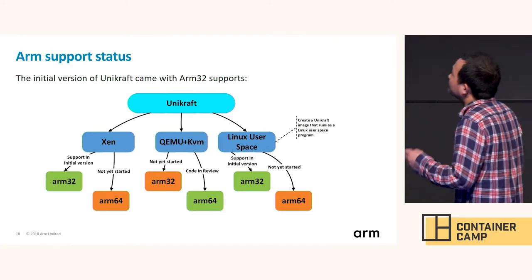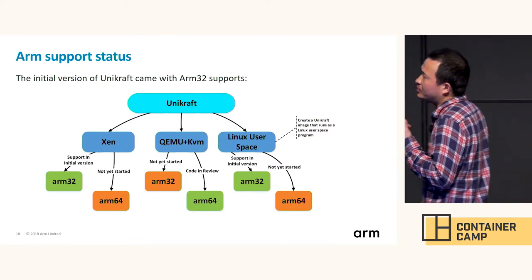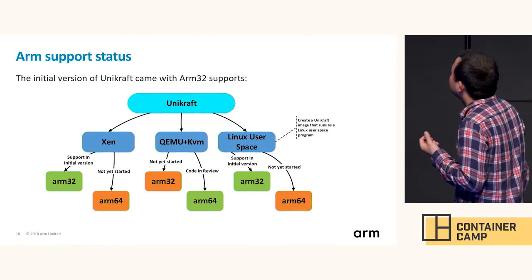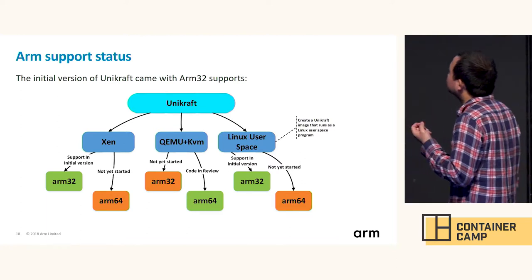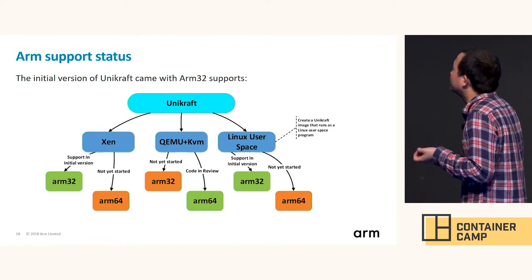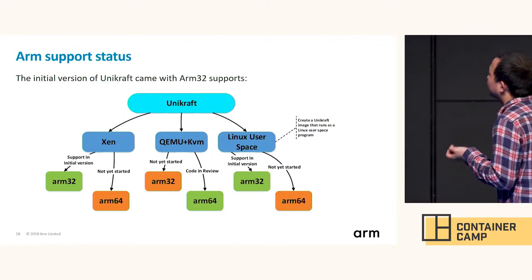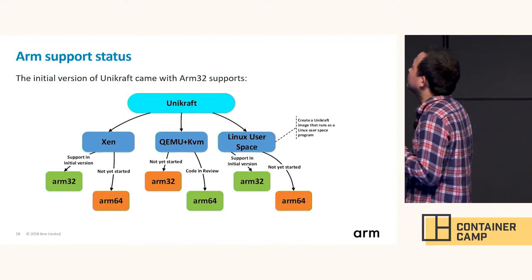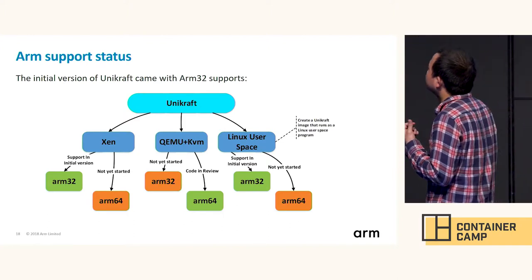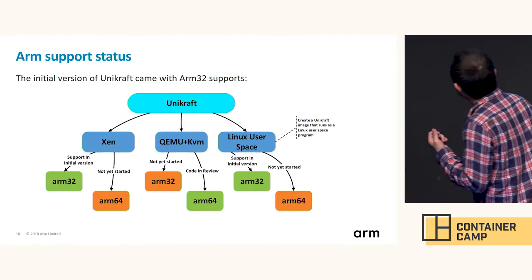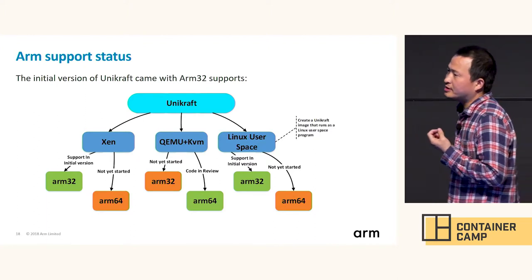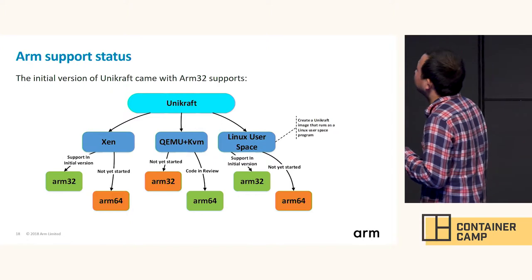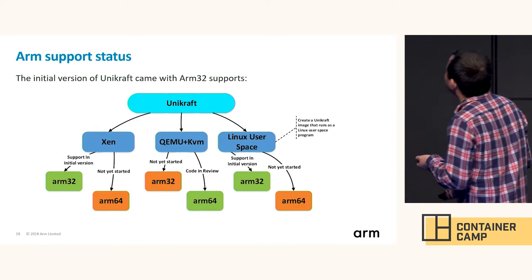The goal of ARM support is to enable UniKraft for ARM32 and ARM64 on Xen and KVM-based hypervisors, but the first target is ARM64 KVM. As QEMU is the de facto standard deployment of KVM, we will start from it.